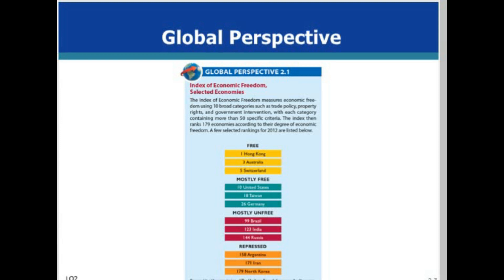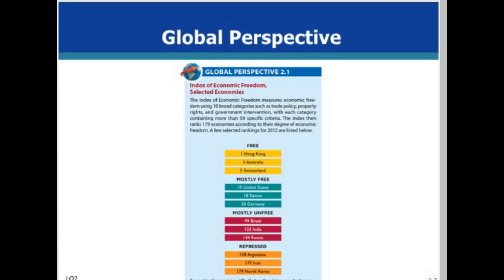A few selected rankings for 2012 are listed. Market systems reward individuals and businesses for development of new technologies, thereby encouraging their development and implementation. Specialization allows economies to take better advantage of their resources and capabilities. Division of labor, or human specialization, increases productivity by making use of differences in abilities, fostering learning by doing, and saving time.